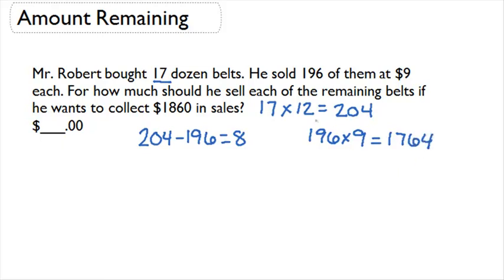Now we want to know how much he should sell each of the remaining belts for if he wants to collect $1,860 in sales. So that means he still needs to make the difference between $1,860 minus $1,764, which is $96.